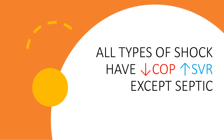All other shock types have decreased cardiac output and increased systemic vascular resistance as a reflex — except septic shock, where the primary disturbance is decreased systemic vascular resistance, which reduces afterload and therefore increases cardiac output. Now let's test ourselves.